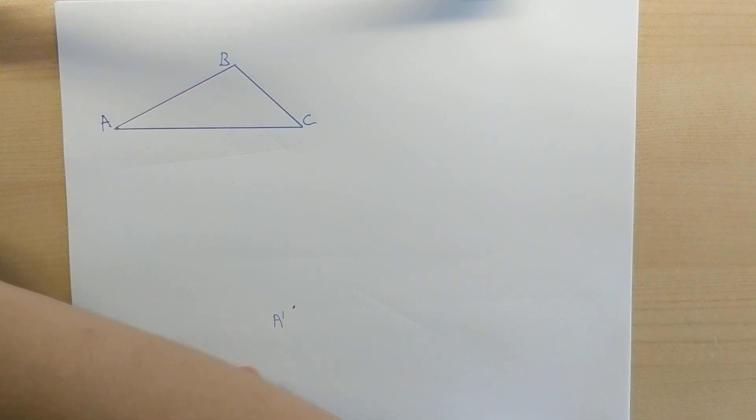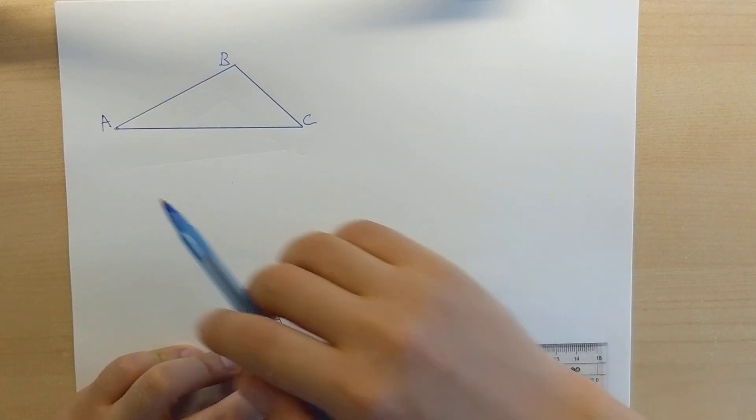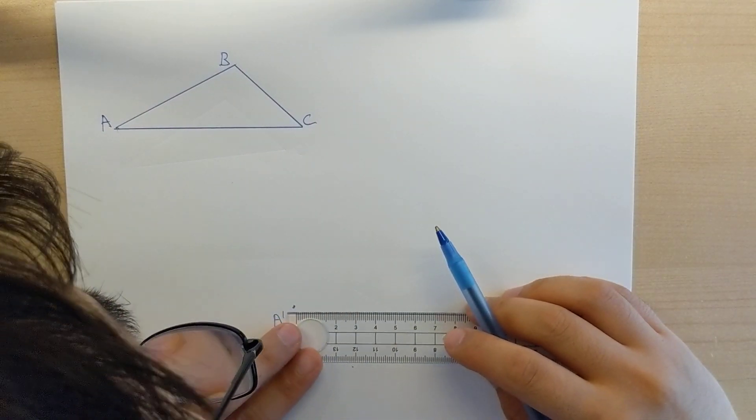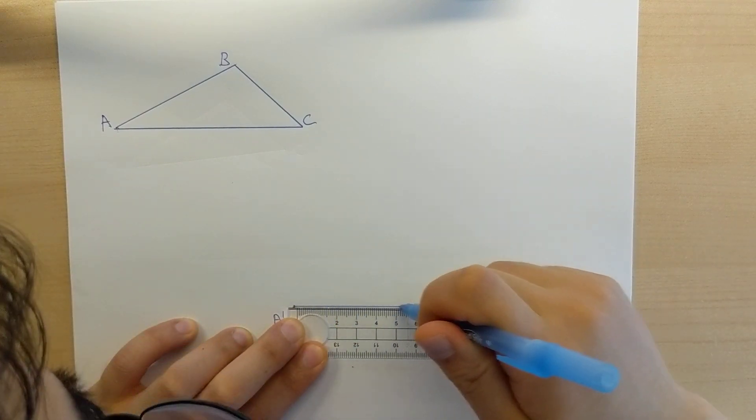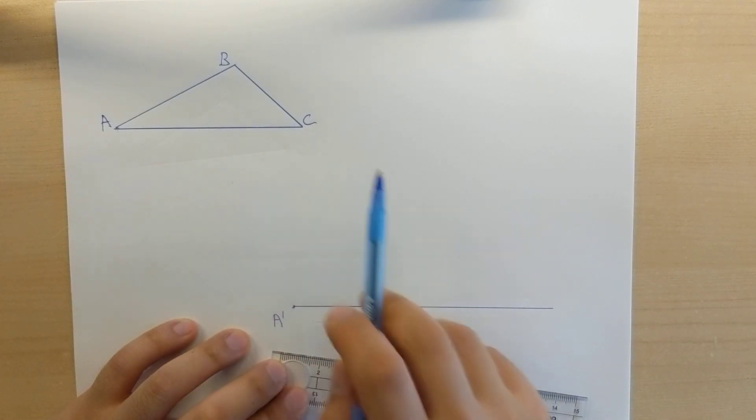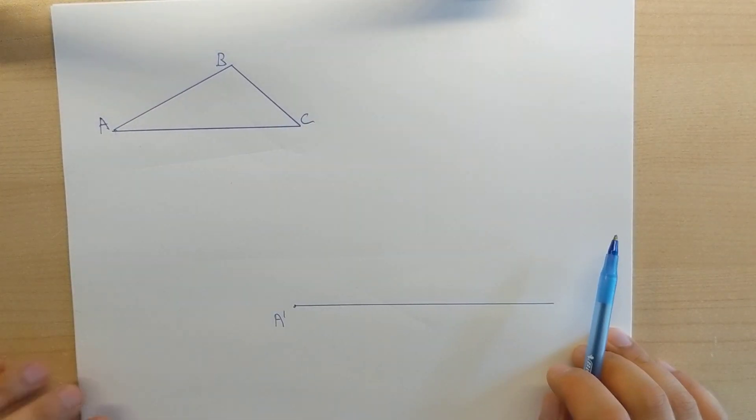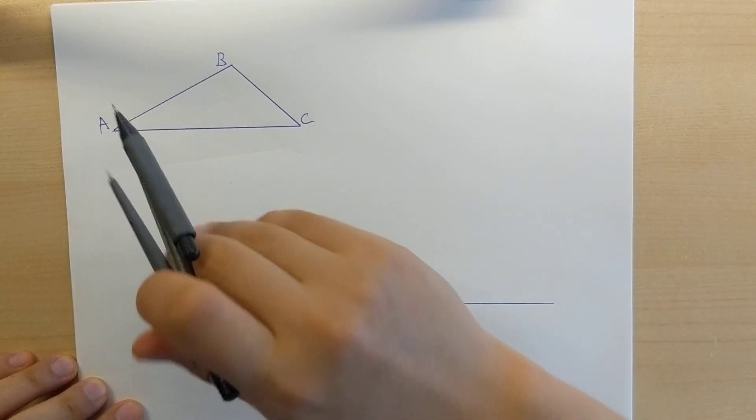So, the first thing that we did when we were copying a line segment was from the point, we draw a ray. And this ray that I just drew, I have no idea how long that is. I don't know whether or not it's longer or shorter than the length of AC, and it really doesn't matter because I'm going to take my compass and I'm going to copy the length of AC using my compass.